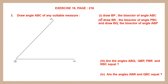Question 1 is: draw BP, the bisector of angle ABC. That means we're going to bisect this angle. Now if this angle is 60 degrees, bisecting means we're dividing it into two equal halves. Each half will be 30 degrees. Whatever your measurement is, half of that will be the bisected angles. So to draw a bisector means dividing it into two equal halves.